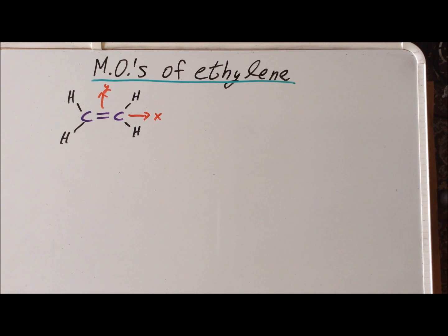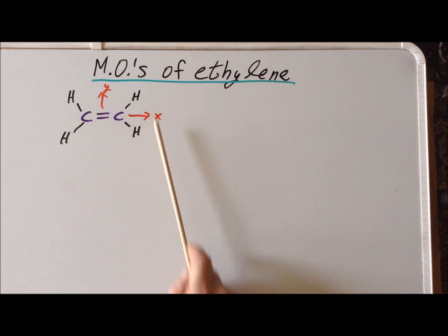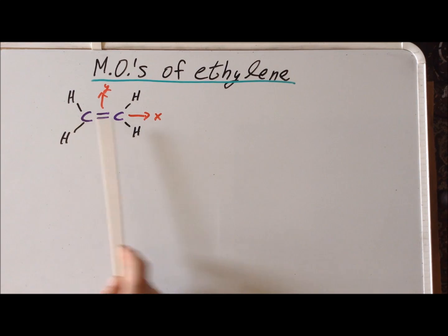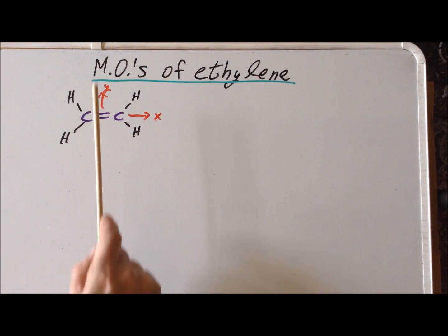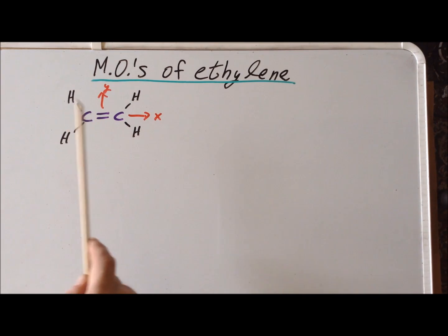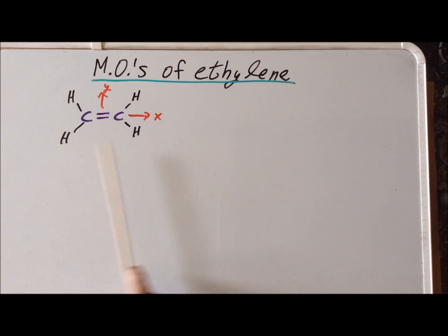Our first step is to make a quick sketch of our molecule. We have arranged the axis so that left and right is the x-axis, up and down is the y-axis, and the z-axis is normal to the whiteboard. That makes the plane of the whiteboard the xy-plane.